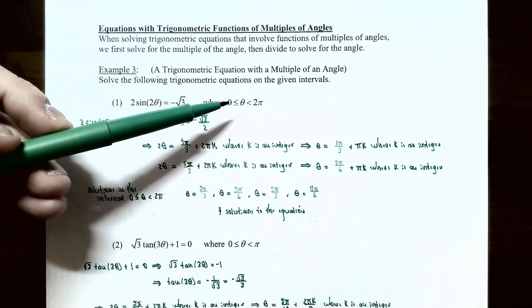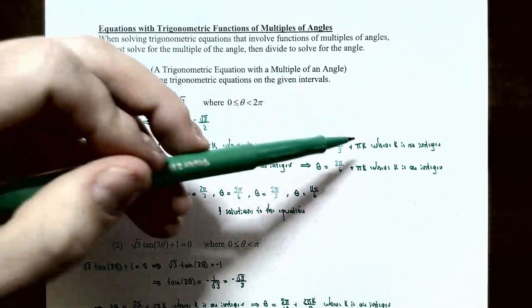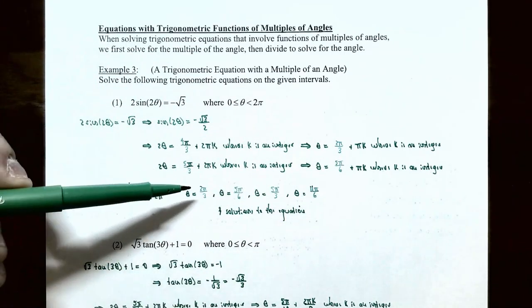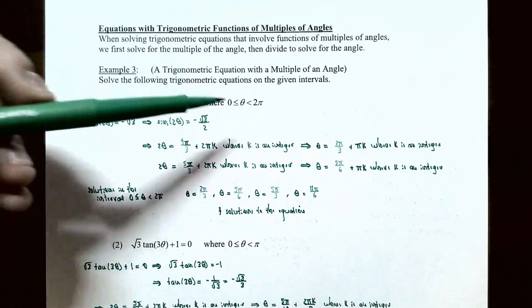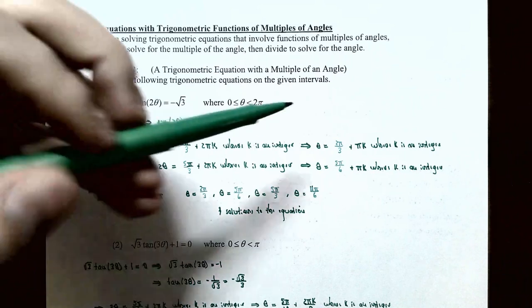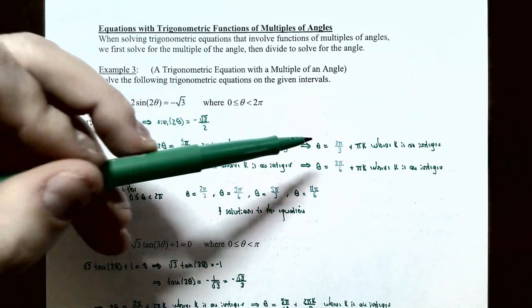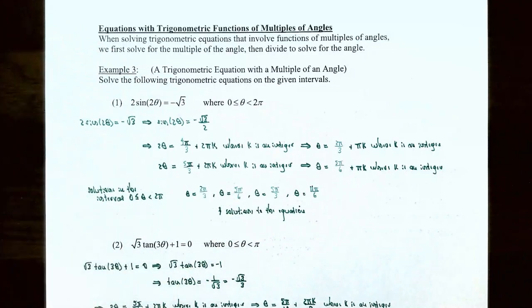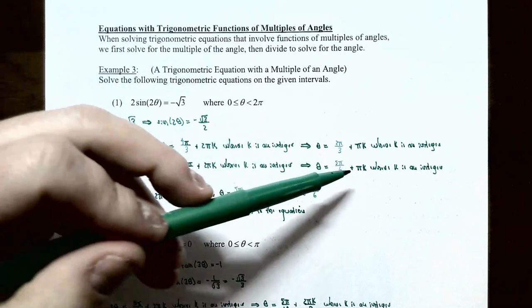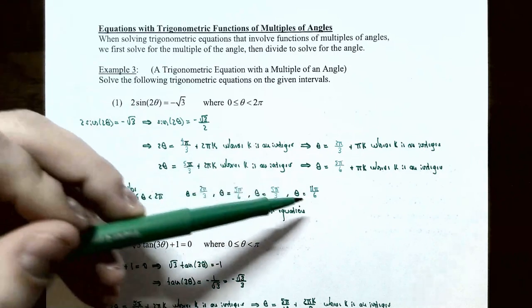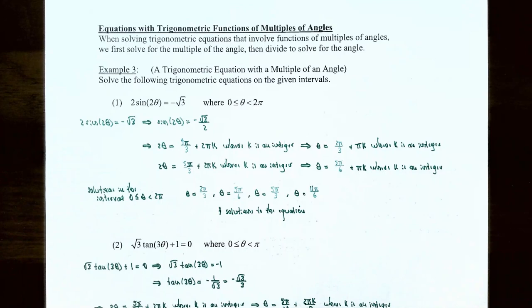For k equals zero: theta equals two pi over three and theta equals five pi over six — both between zero and two pi. For k equals one: theta equals two pi over three plus pi equals five pi over three, and theta equals five pi over six plus pi equals eleven pi over six. All four values are between zero and two pi, giving four solutions: two pi over three, five pi over six, five pi over three, and eleven pi over six.